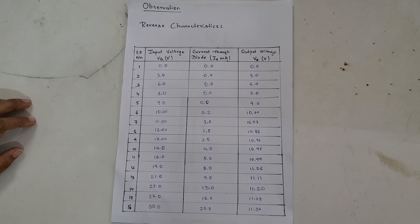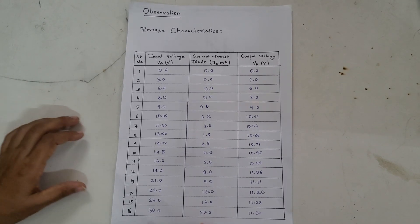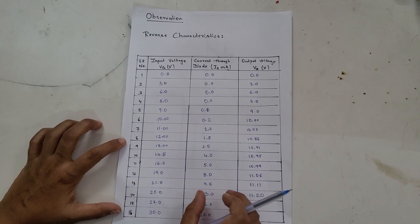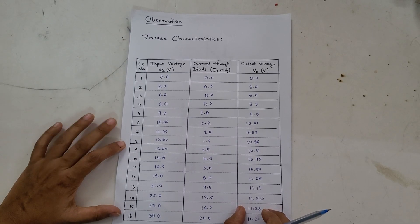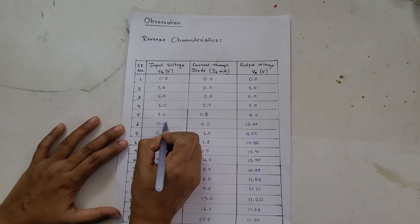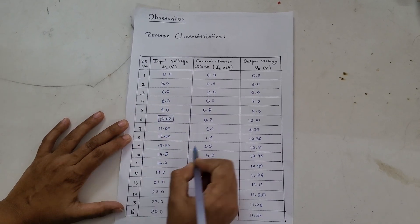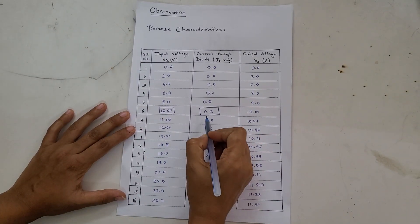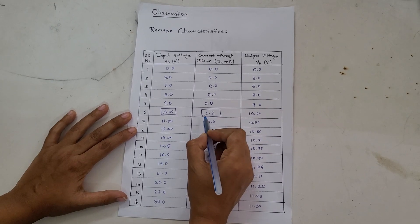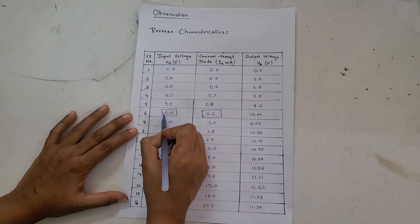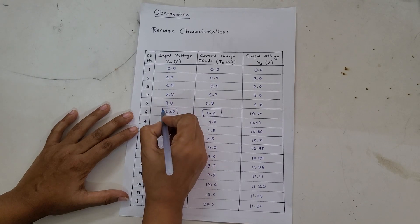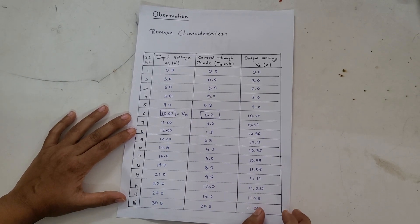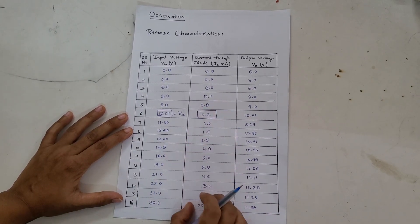This is how we write the observation table from the readings taken from the circuit. The columns are: input voltage, current through the milliammeter, and output voltage across the diode. As you can see, at 10 volts the milliammeter started showing deflection, so 10 volts is considered the breakdown voltage of our Zener diode. This data is what we are going to plot on the graph as current versus voltage.